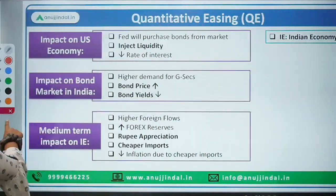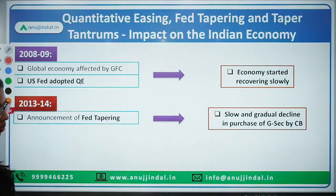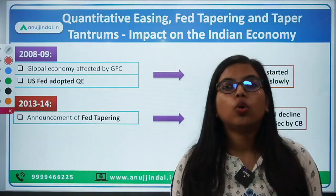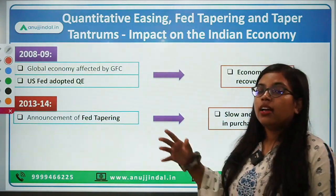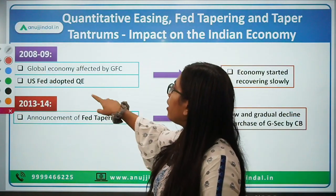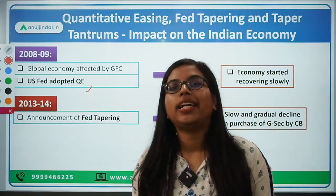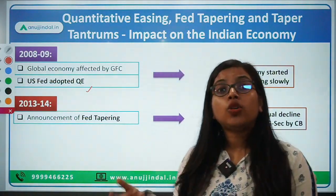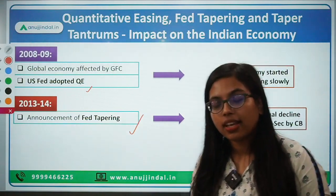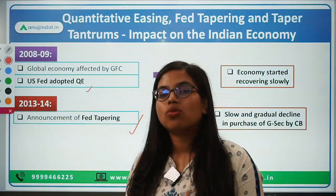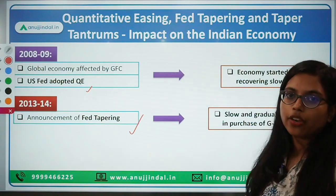The similar situation happened in India, and a similar situation happened in the year 2019 as well when the COVID-19 pandemic occurred. To boost the economy, the Fed Reserve again adopted quantitative easing — easy money was provided so that people could spend and the economy could recover. And in 2021, the Fed announced Fed tapering so that the excess liquidity in the market could be reduced. Similar parallels can be drawn for the COVID-19 period.